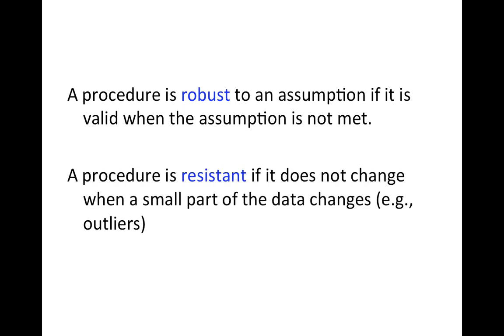Here are two terms that we'll use. Robustness means that a procedure, such as a t-test, still works even if the assumption isn't true. So we have a procedure that's robust to an assumption if the procedure works regardless of whether the assumption is true.